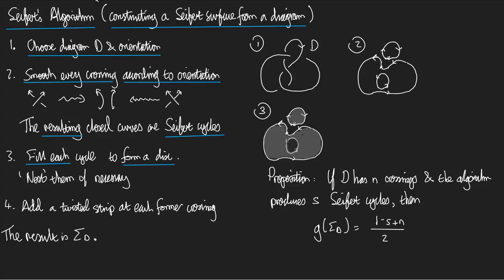Okay. And then step number four. This is going to blow your mind. Step number four. Add a twisted strip at each former crossing. So, I look inside my diagram and I ask myself, where did there used to be a crossing? Well, so for example, here, there used to be a crossing like this. With this strand going over and these ones coming under. So, into that, I insert a twisted strip. Looking like this. And it joins together the two, the disks on either side of the old crossing.